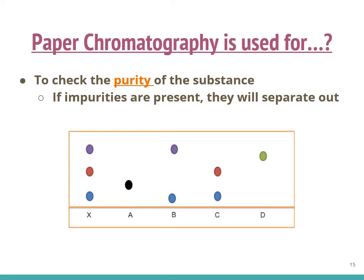For instance, in this picture we can see that samples A and D are pure because they only have one spot. But for samples B and C, they are impure because when separated, we can see that there are two different spots being separated.